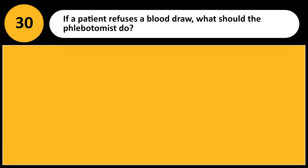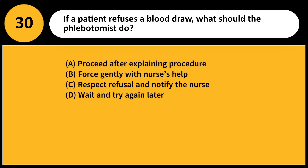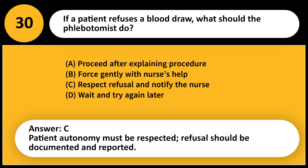If a patient refuses a blood draw, what should the phlebotomist do? A. Proceed after explaining the procedure. B. Force gently with nurse's help. C. Respect refusal and notify the nurse. D. Wait and try again later. Answer: C. Patient autonomy must be respected; refusal should be documented and reported.